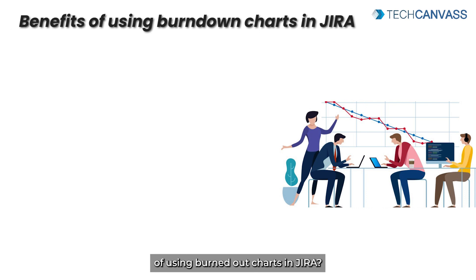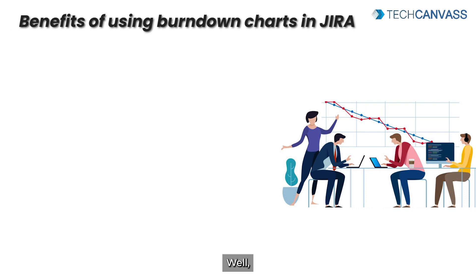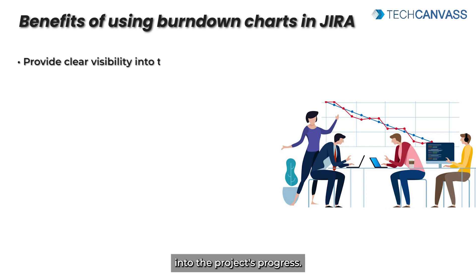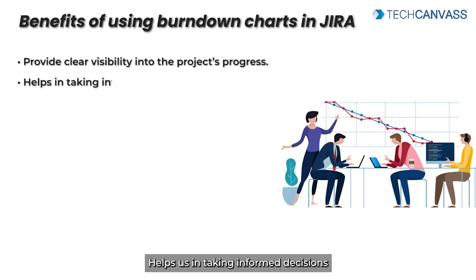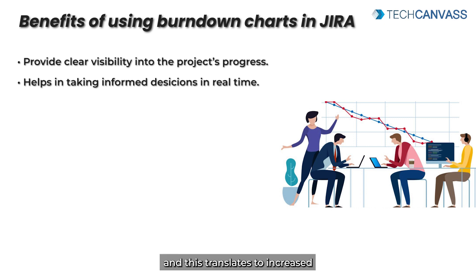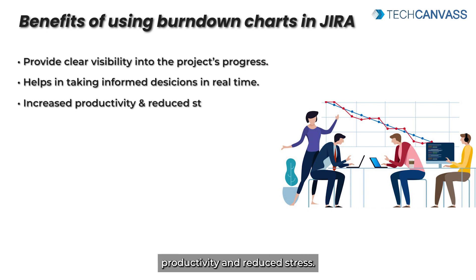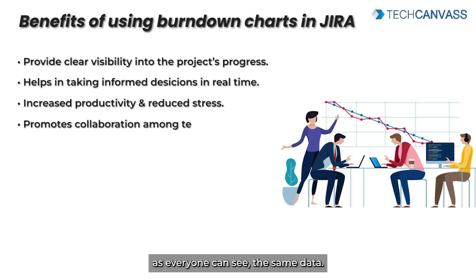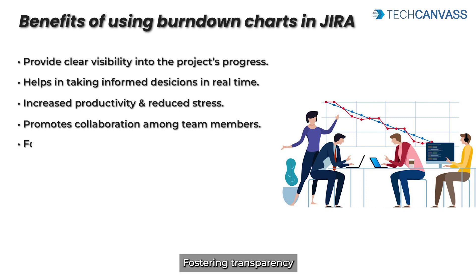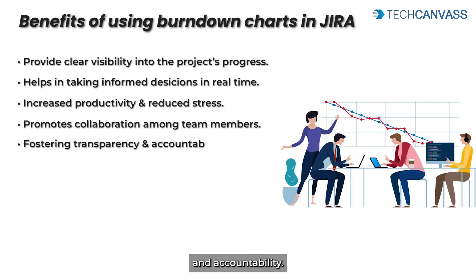So what are the benefits of using burn down charts in Jira? They provide clear visibility into the project's progress, helping us in taking informed decisions in real time. And this translates to increased productivity and reduced stress. Plus, it promotes collaboration among team members as everyone can see the same data, fostering transparency and accountability.